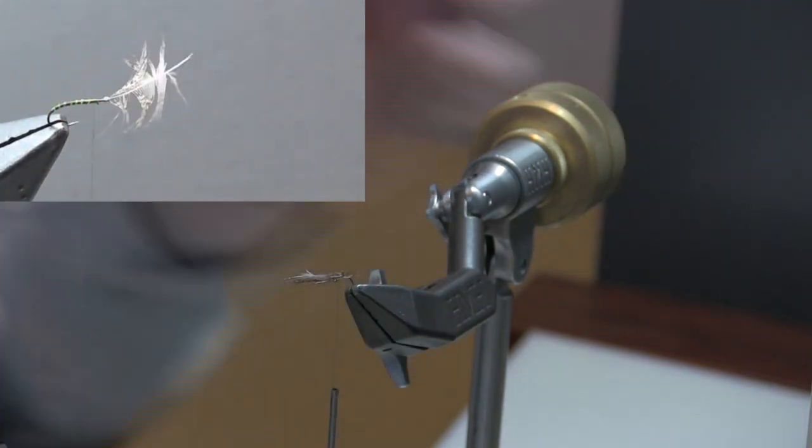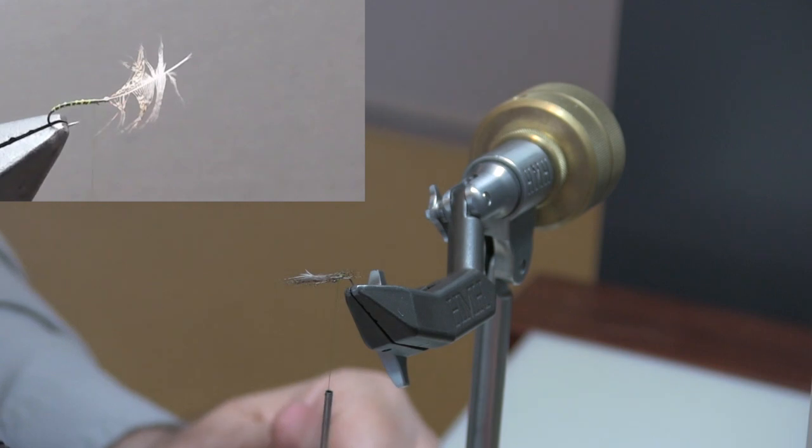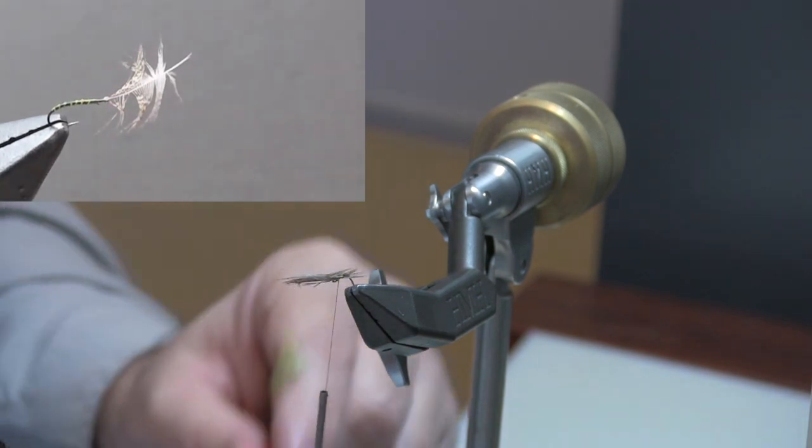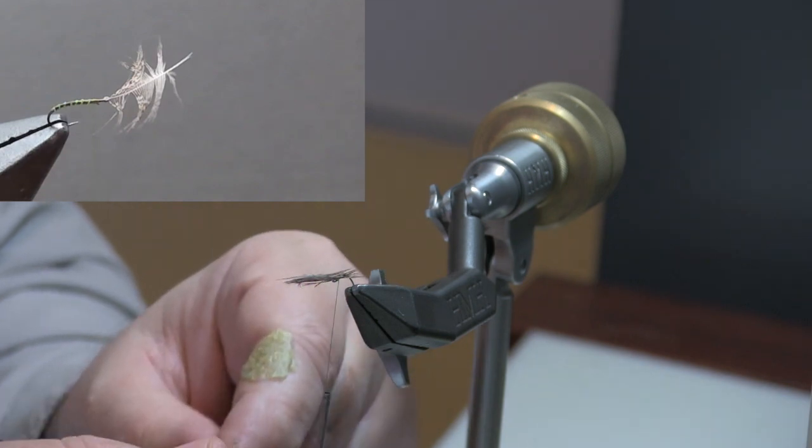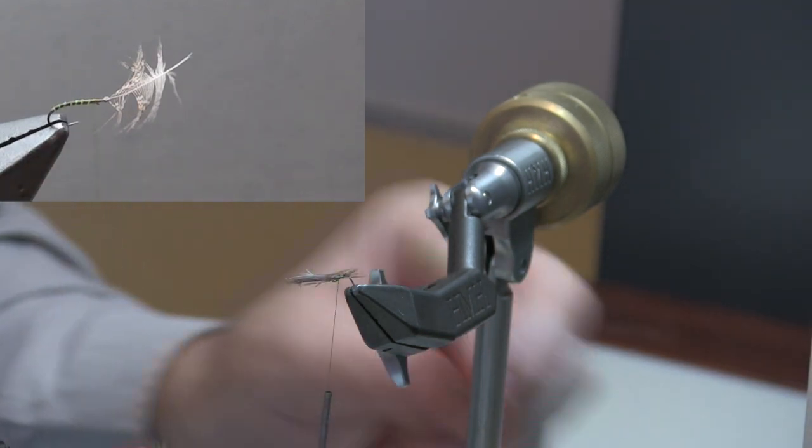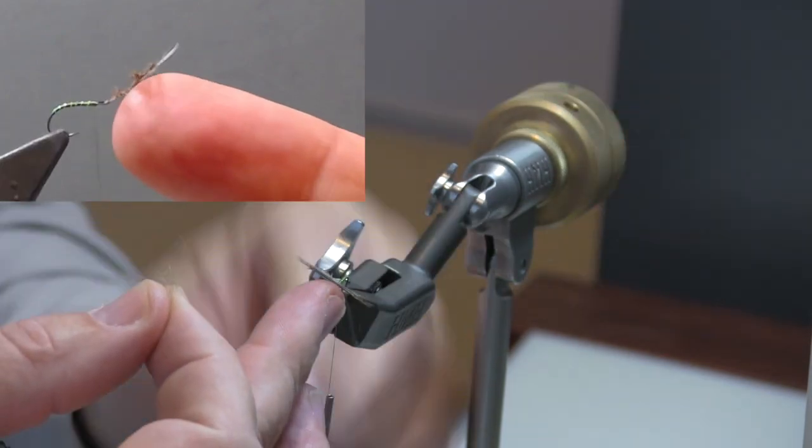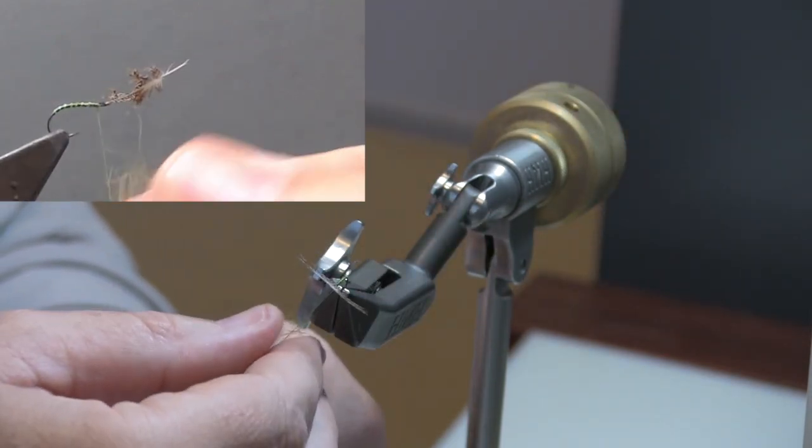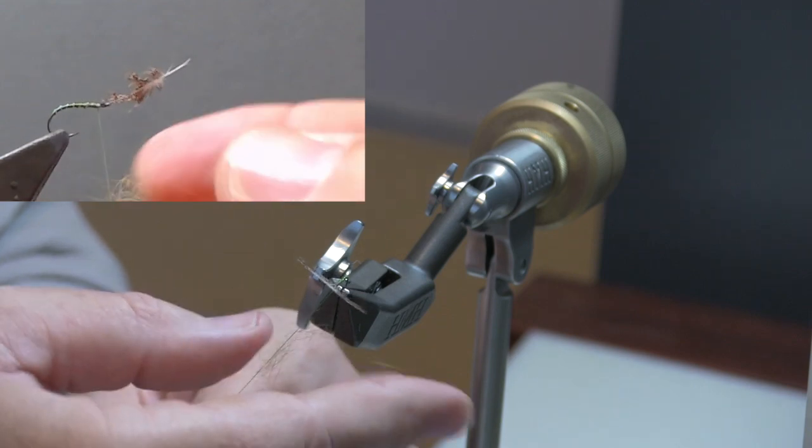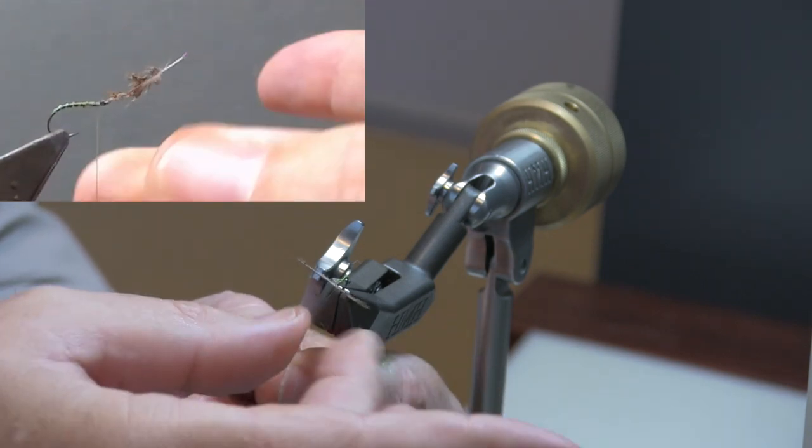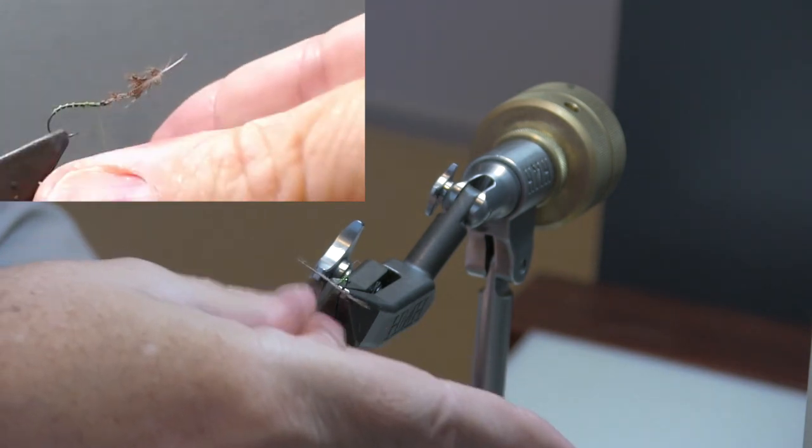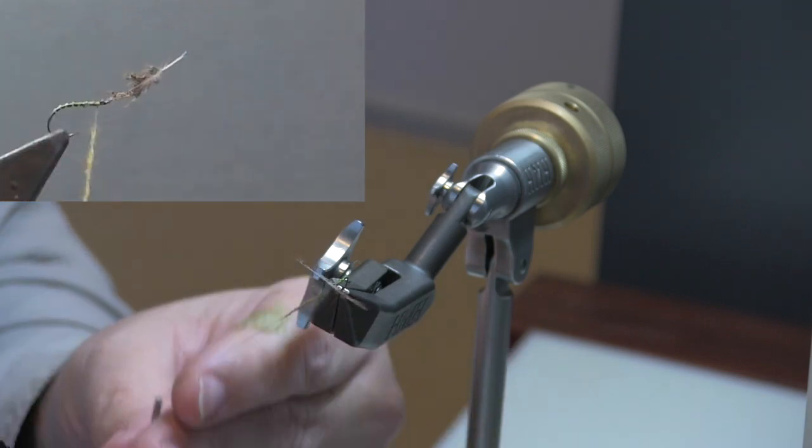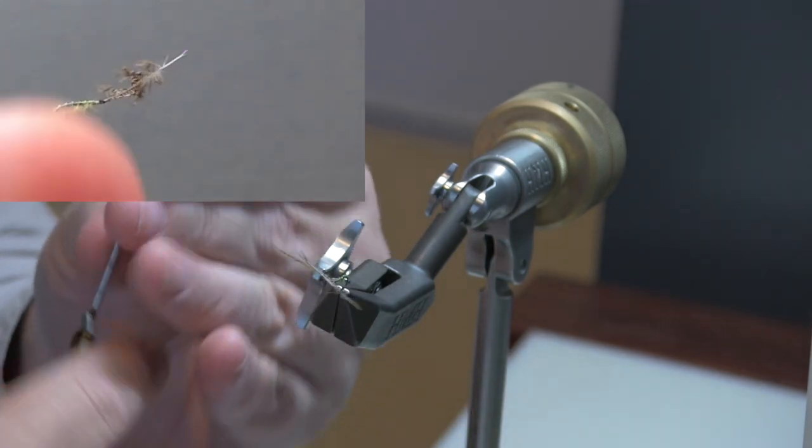The next part of the fly is, again, this is another area where some people say you don't need to put this part in, but I like to, and that is a thorax. So what I'm going to do is, I'm taking a little bit of brown olive hare's ear dubbing, and I'm taking just a very, very small amount of this. In fact, that's even too much.